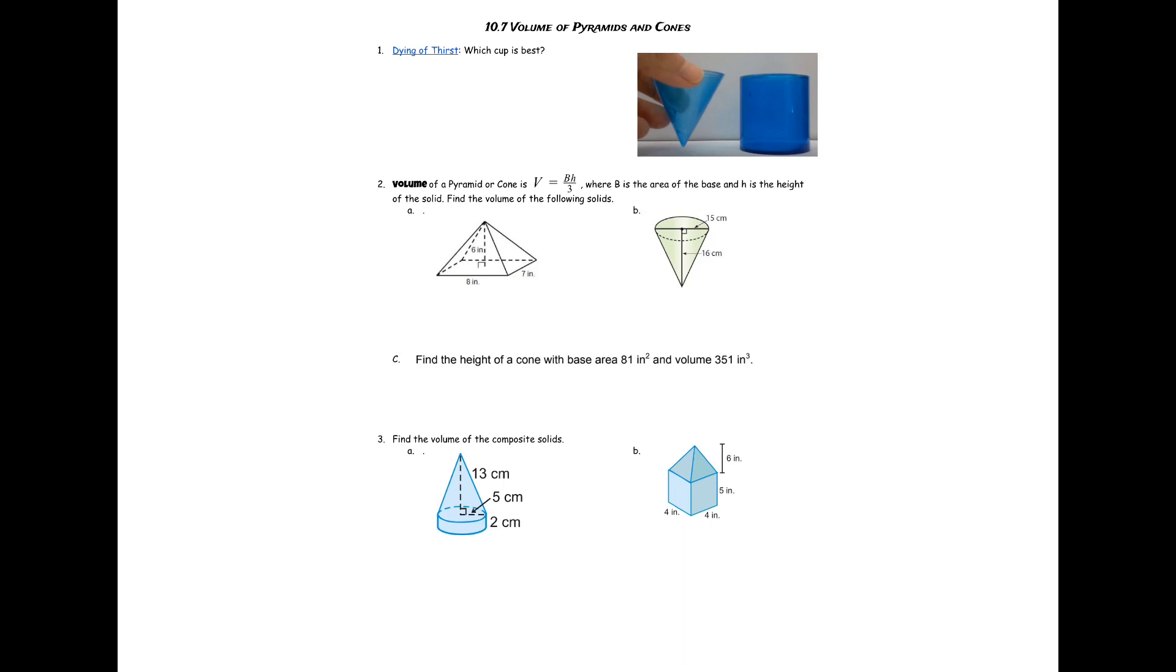All right, continuing with 10.7 Volume of Pyramids and Cones. This is going to be very similar to prisms and cylinders. The first picture asks which cup do you think is best if you're dying of thirst. Most people say the cylinder, but the video shows that three of these cones can fit inside the cylinder. So the formula is very similar to prisms and cylinders, just now divided by three since three of them fit in.